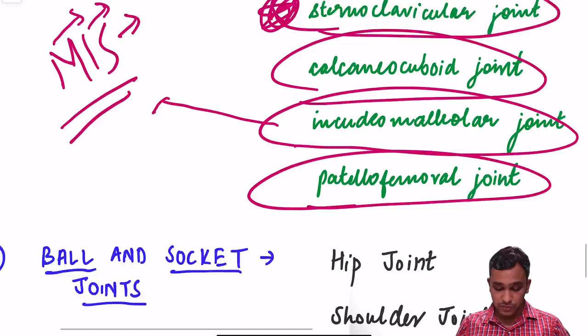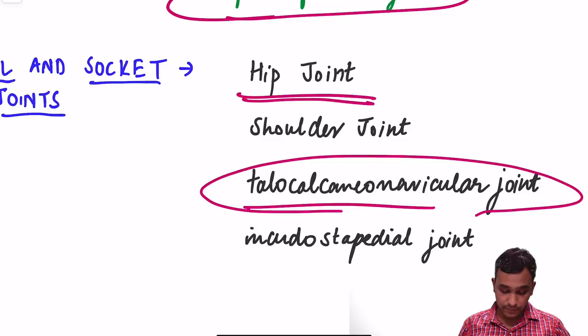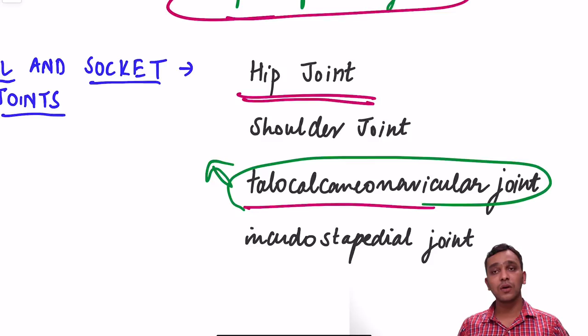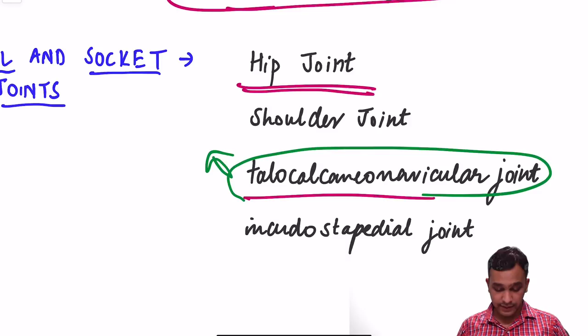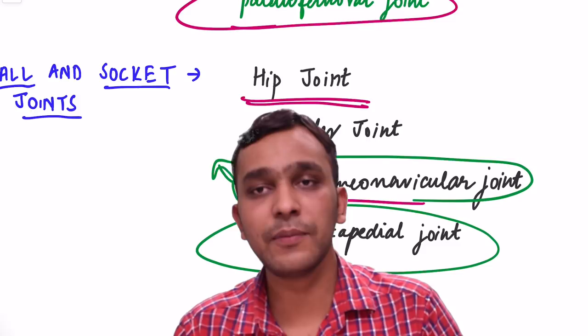Ball and socket joints include the hip joint, shoulder joint, and the talo-calcaneo-navicular joint — an important one to remember. The joint between the incus and stapes is also a ball and socket joint. To summarize: the joint between malleus and incus is a saddle joint, and the joint between the incus and stapes is a ball and socket joint. I will be coming up with more videos like this.